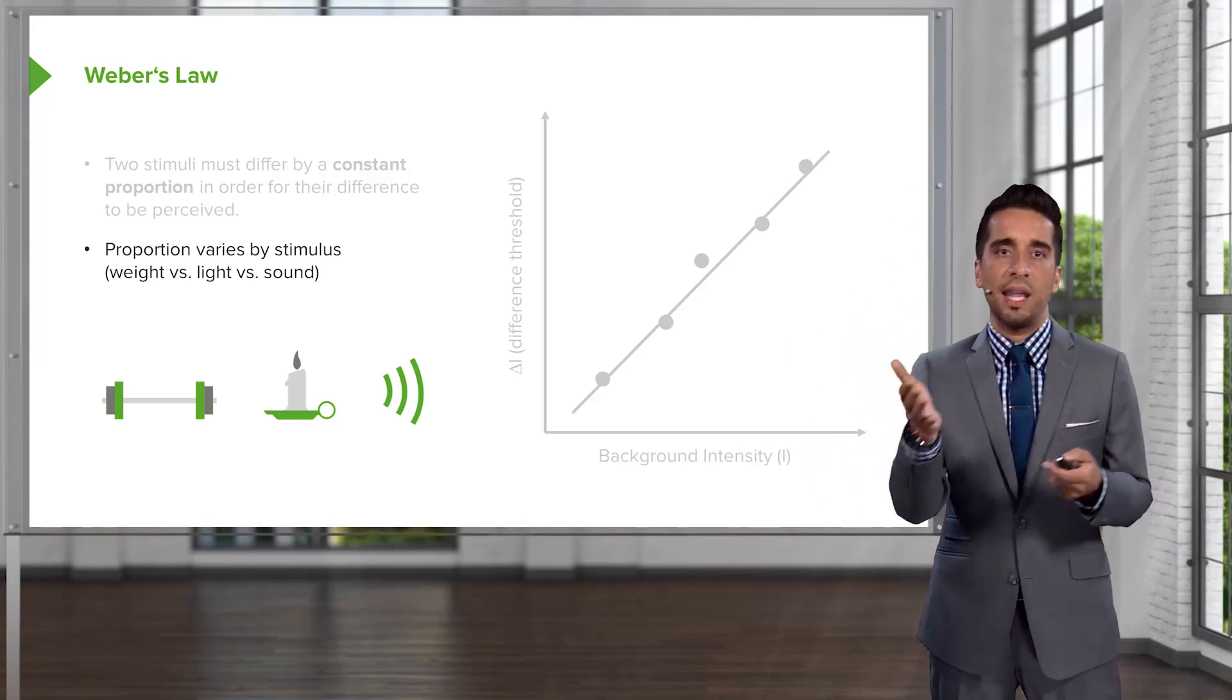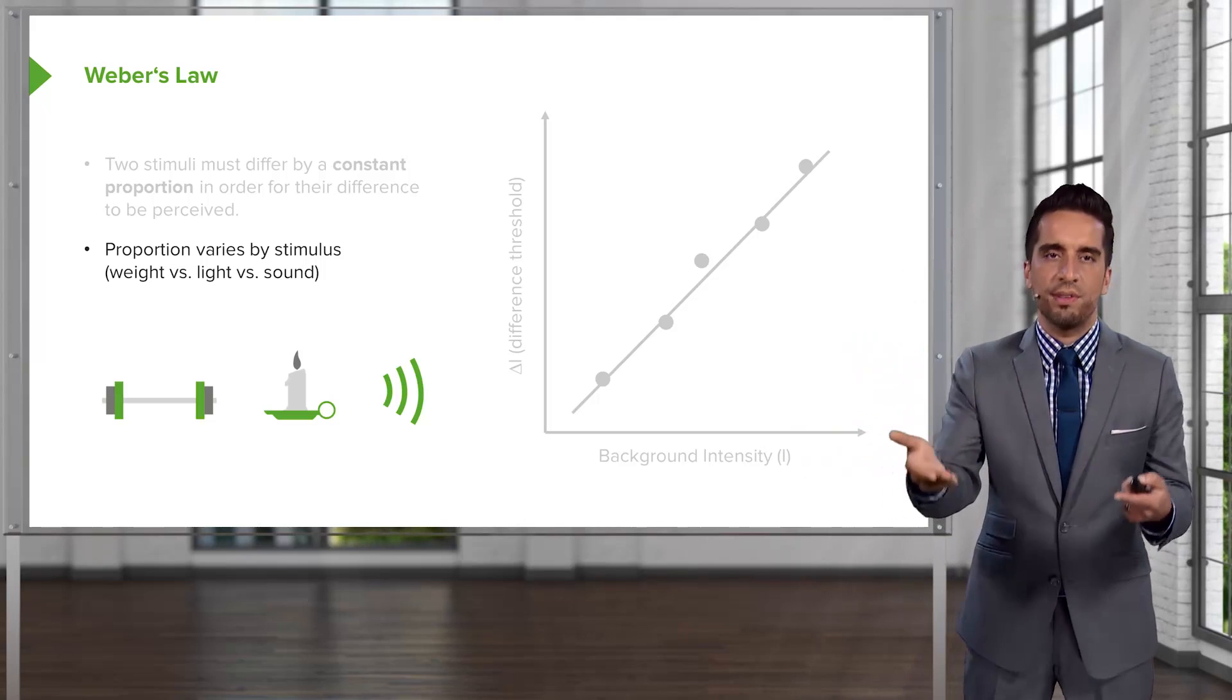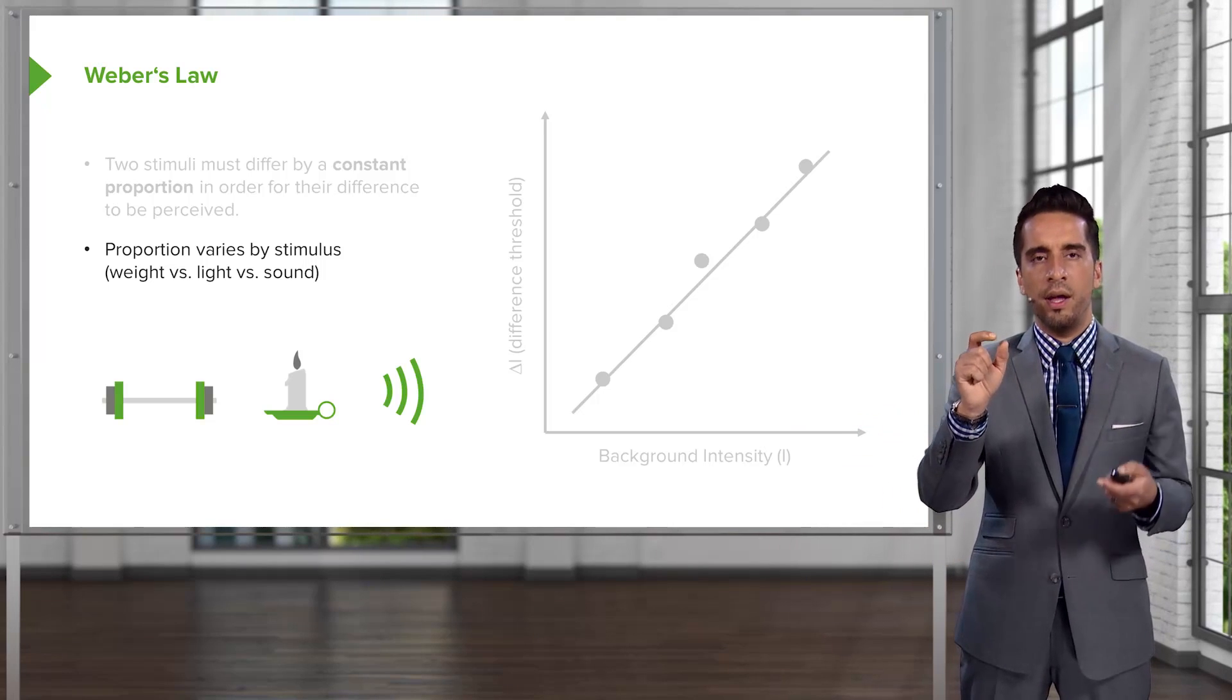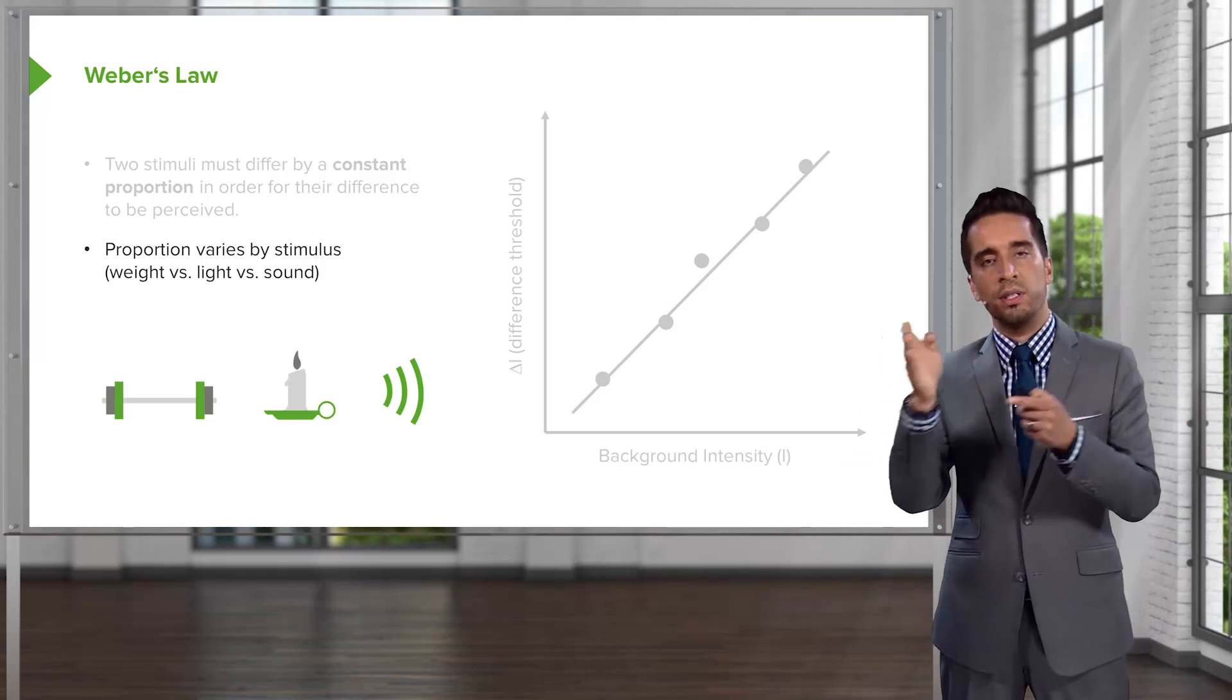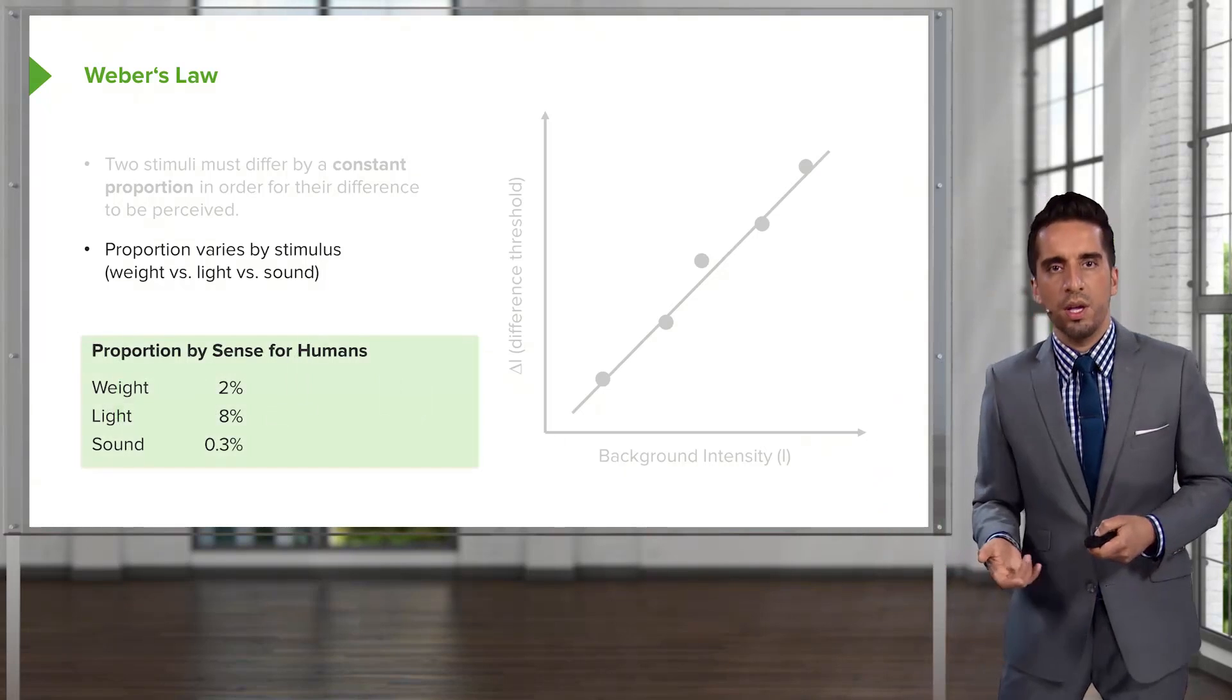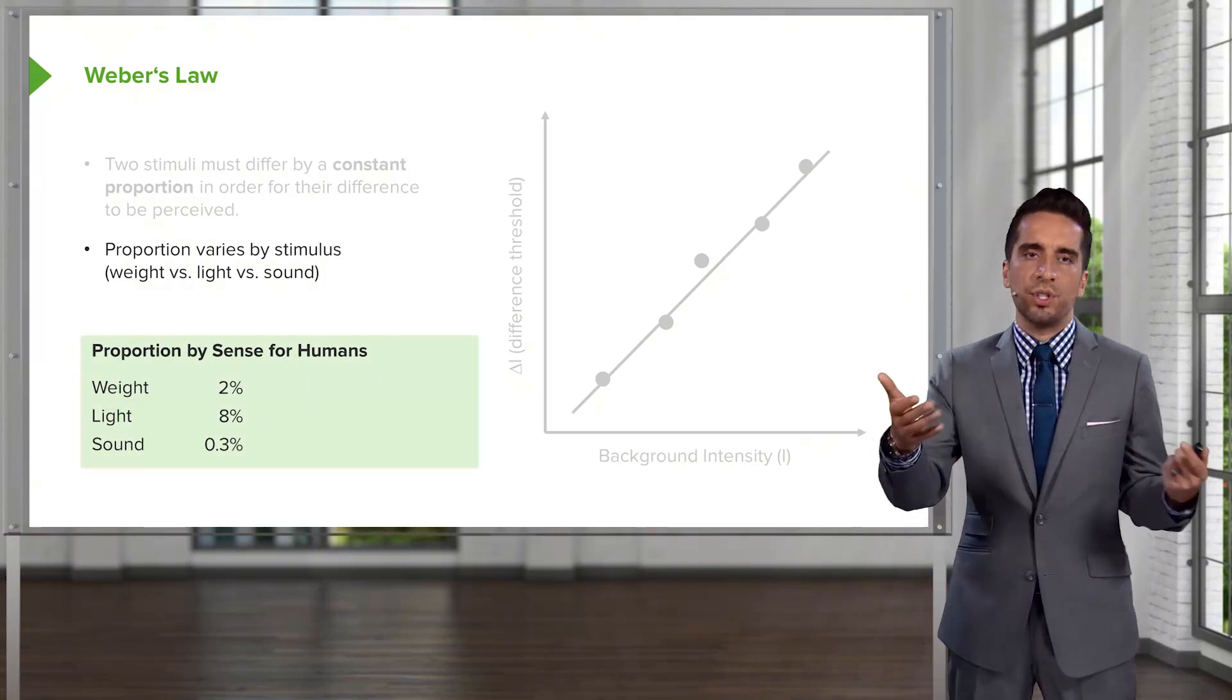Now, if you move to say light, and we're looking at lumens of light, you need a certain difference there. And that proportion is going to be different than what we see for weight. And the same thing holds true for sound. So, we can look at these by certain senses.